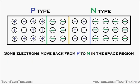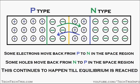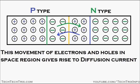Some electrons move back from P to N in this space charge region, and some holes move back from N to P in this space charge region. This continues to happen until an equilibrium is reached. This movement of electrons and holes in the space charge region gives rise to a current called diffusion current.